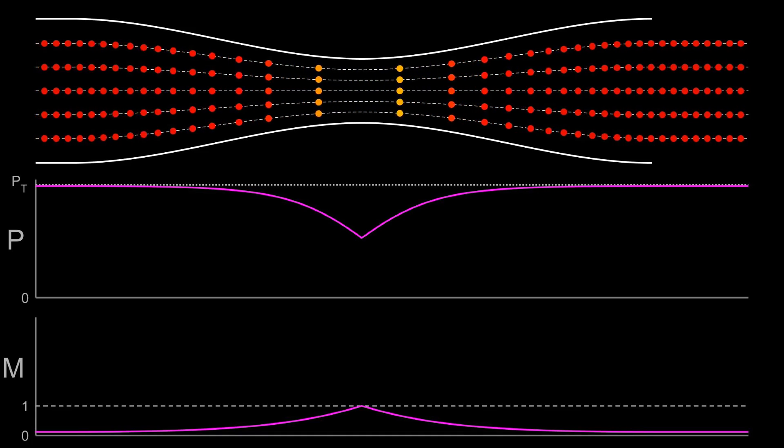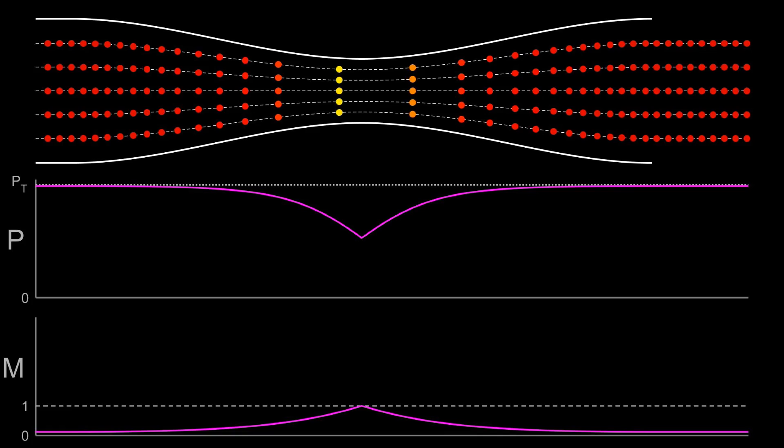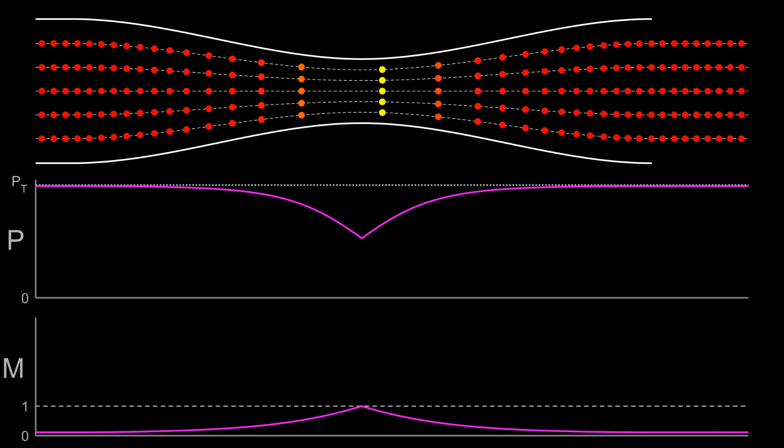Eventually, we reach Mach 1 at the throat. Now let's pause and recall the points we introduced earlier. The fluid speeds up or slows down due to pressure gradients.